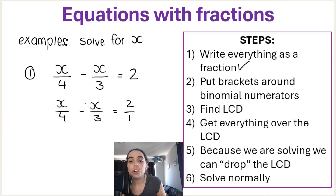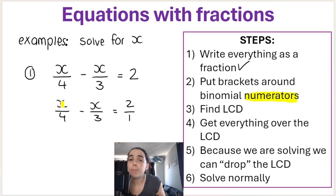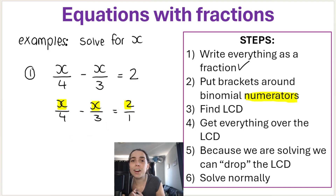Step two: put brackets around binomial numerators. It's not applicable in this sum. Remember, a numerator is the top of the fraction. A binomial has two terms. This has got one term, and that's got one term, and that's got one term. So we don't need to worry about step two in this example.